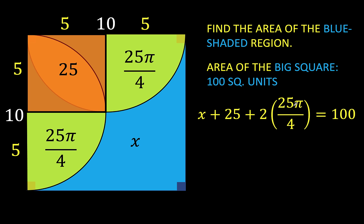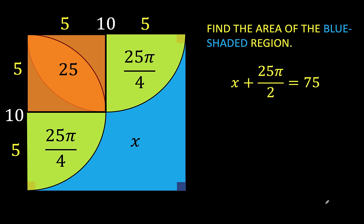Simplifying 2 times 25π over 4, we have 25π over 2. Then we subtract 25 from both sides to arrive at x plus 25π over 2 equals 75. Subtracting 25π over 2 from both sides, we now know the value of x to be 75 minus 25π over 2 square units.